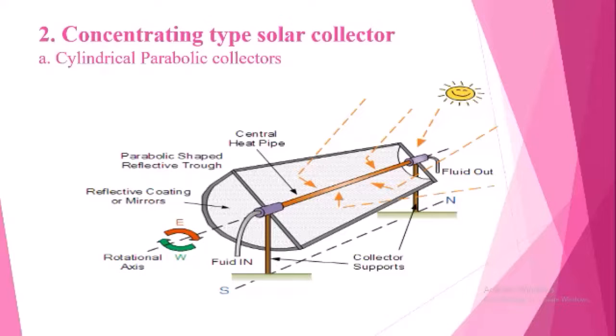As shown in the diagram, in order that the solar radiations are always focused on the line with respect to changes in the sun's position, either the trough or the collector pipe is rotated continuously about the axis of the absorber. The orientation of trough-type collectors is kept in the east-west or north-south direction.